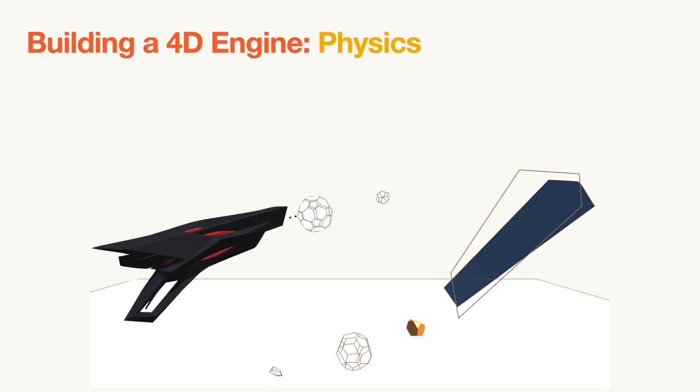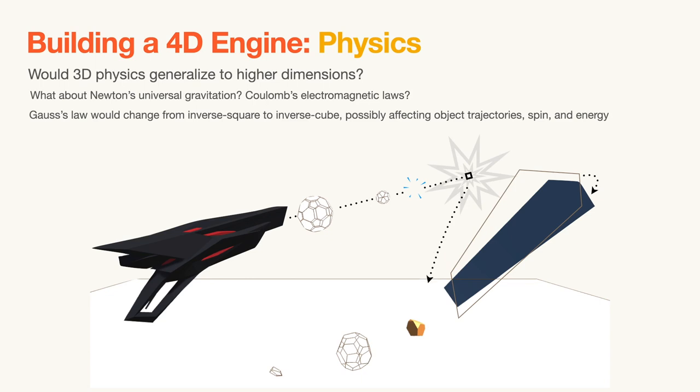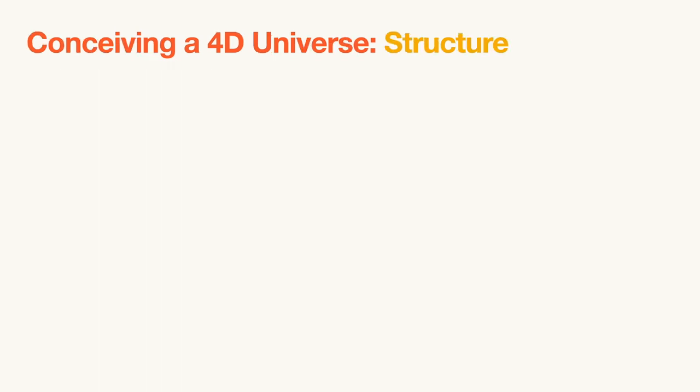As far as physics, the big question is whether 3D physics would generalize to 4D. The answer is probably not, especially considering the implications of Gauss's law. However, for the sake of practicality, in this paper, we assume 4D physics to be a simple generalization of 3D physics. In this example, we can achieve interactions such as a bullet first becoming invisible, hitting and revealing a hidden hyperplane, and then bouncing back on the ground until it rolls again out of the cross-section.